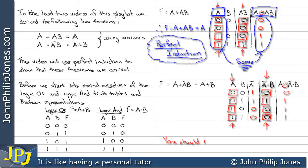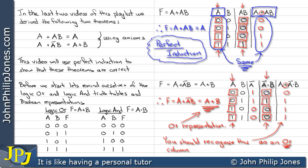Now we need to look at this column. You should recognize that this is the same column you would expect for an OR gate. Therefore we can conclude that this does equal A or B, because that's the Boolean representation for an OR. We've done this using the technique of perfect induction.